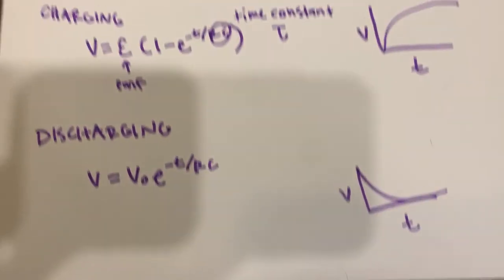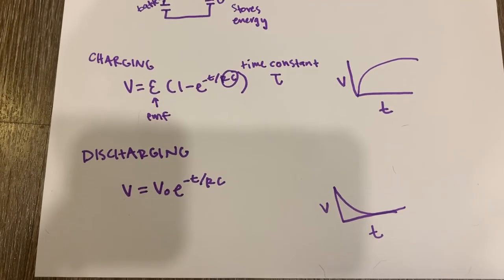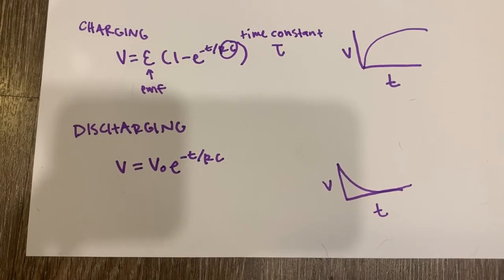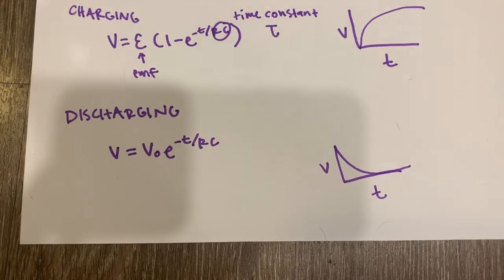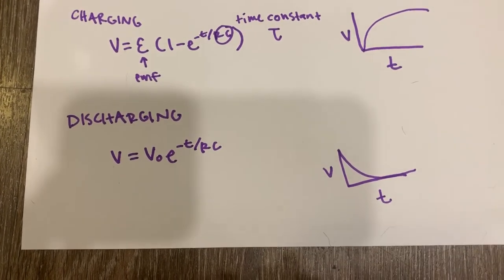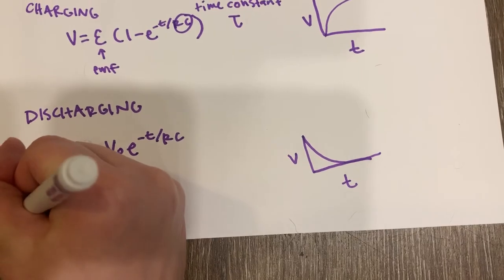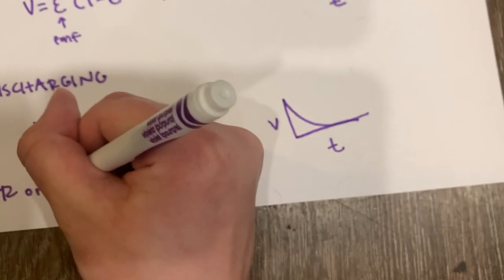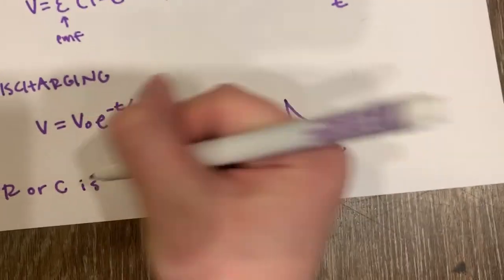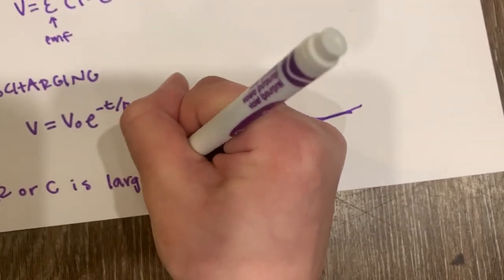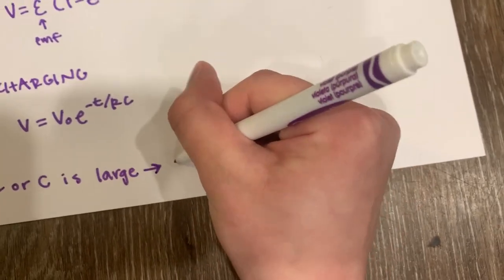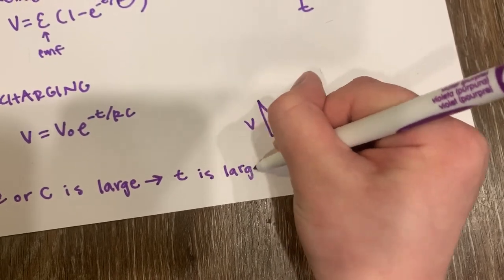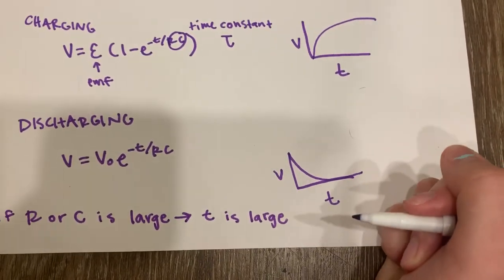So we see in both these equations that RC, our time constant, dictates the rate at which the capacitor charges or discharges. So what makes a capacitor charge fast? That would be a low resistance. Basically, what you need to remember is if R or C is large, then time will also be large. And that means it will take a longer amount of time.